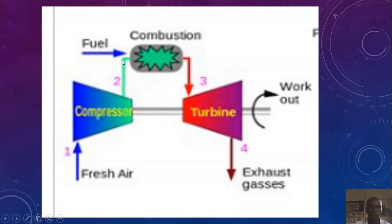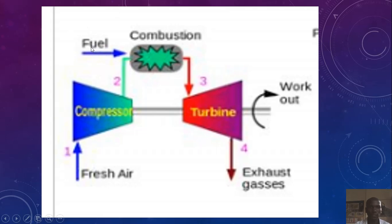From the compressor, flow goes to the combustor, then to the turbine. There is a link because the turbine turns the compressor — the compressor is driven by the turbines. We see the fuel coming into the combustion together with the fresh air.